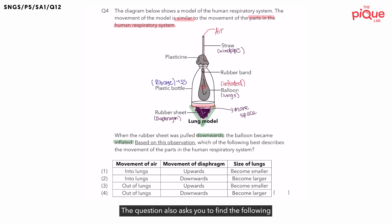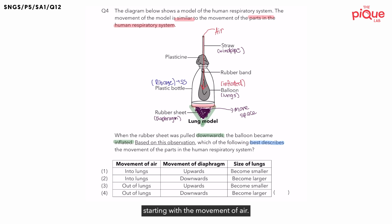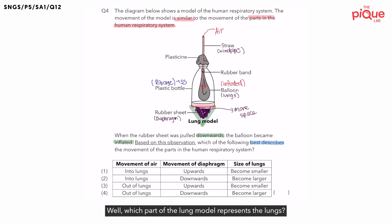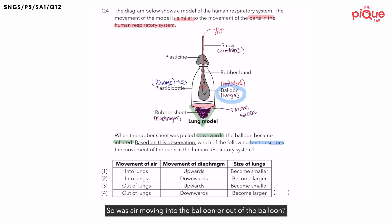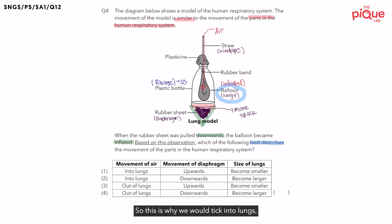The question also asks you to find which option best describes the movement of parts in the human respiratory system, starting with the movement of air. Is it into lungs or out of lungs? The balloon represents the lungs — and air was moving into the balloon. So this is why we tick 'into lungs' and cross out 'out of lungs'.